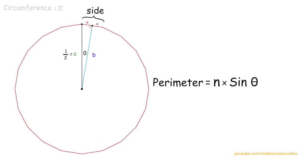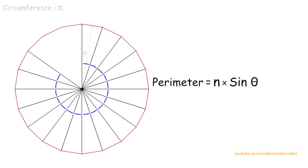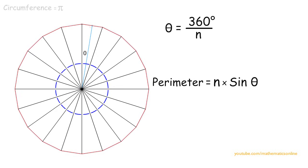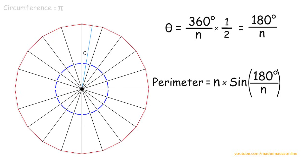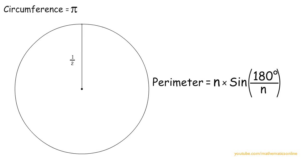Finally, we must find what angle theta equals. If we connect all the vertices of the polygon to the center, each individual angle equals 360 degrees divided by the number of sides. Theta is just equal to one half of one of those angles, so theta equals 180 degrees over n. Therefore, the perimeter of the polygon is equal to n times sine of 180 degrees over n. Looking back at our circle with circumference equal to pi, we can understand why increasing n approximates pi — because the perimeter of the inscribed polygon with more sides approximates the circumference of the circle.